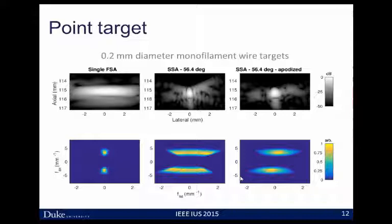Our first characterization uses a point target — a wire target at a depth of 11.5 centimeters in a water tank. Our reference image, the full synthetic aperture, is on the left, showing poor lateral resolution and very limited region of support in frequency space. As we sweep, we build up that extended region of support, which leads to a much tighter point spread function. This is a 56.4-degree sweep, and we see large diagonal side lobes that contribute to off-axis scattering. As we apply apodization, we reshape lateral frequency space to give us a more characteristic shape. By trading off some main lobe resolution, we improve side lobe behavior and end up with much more conventional lateral side lobes.